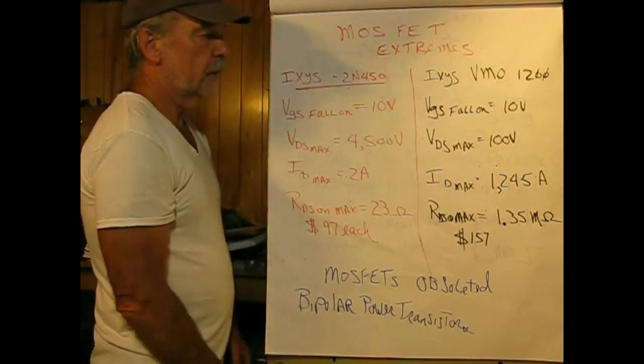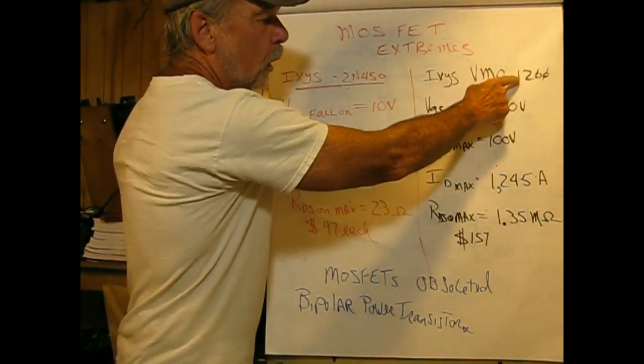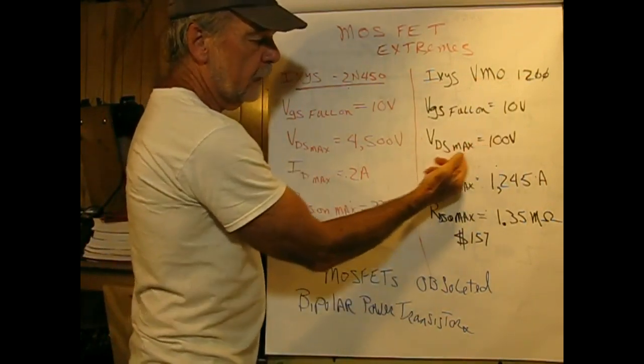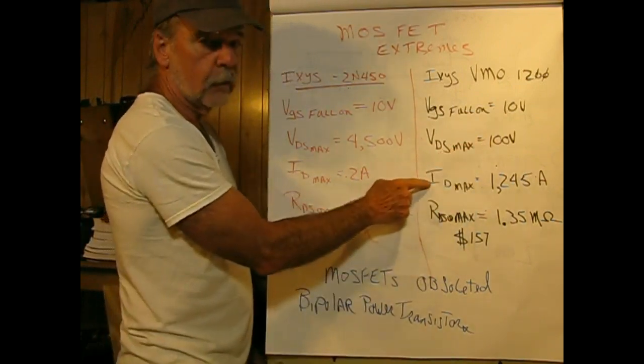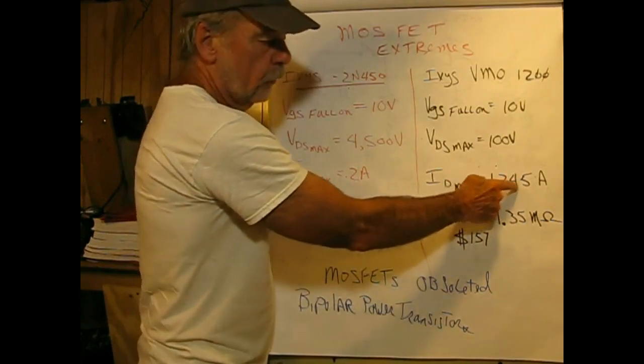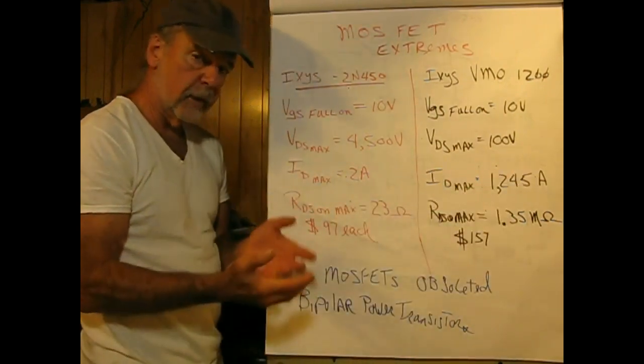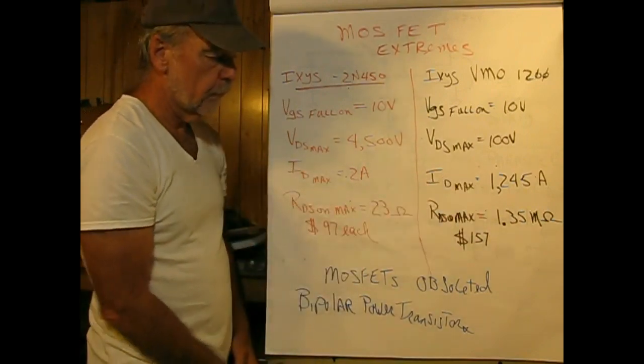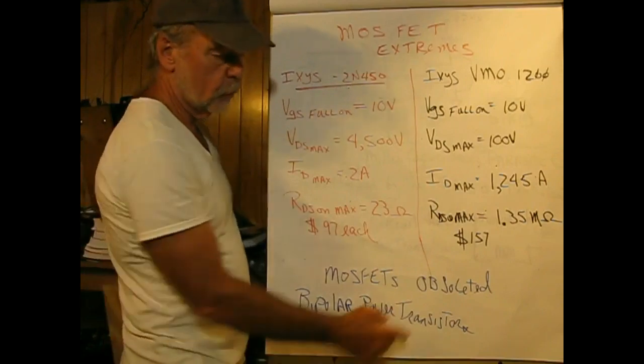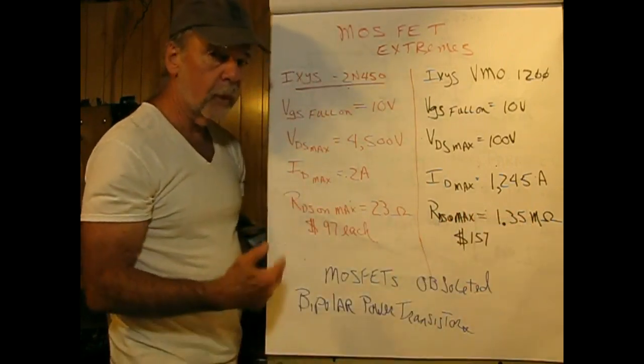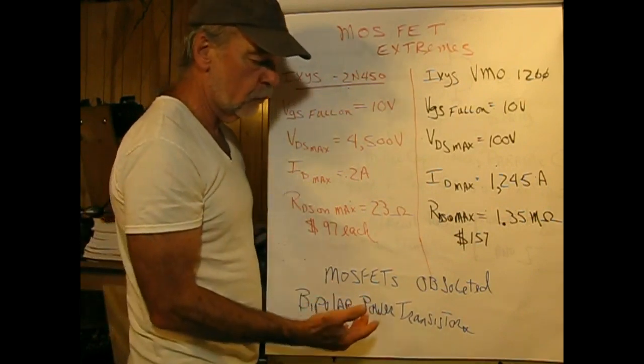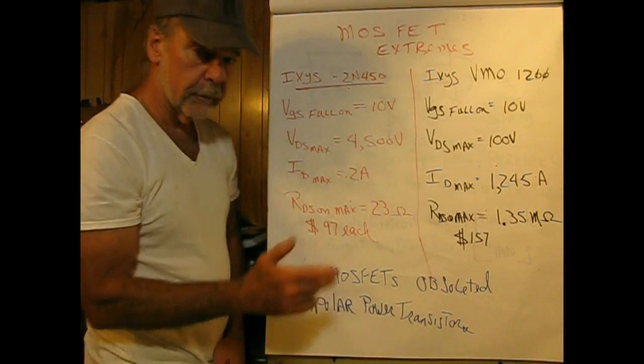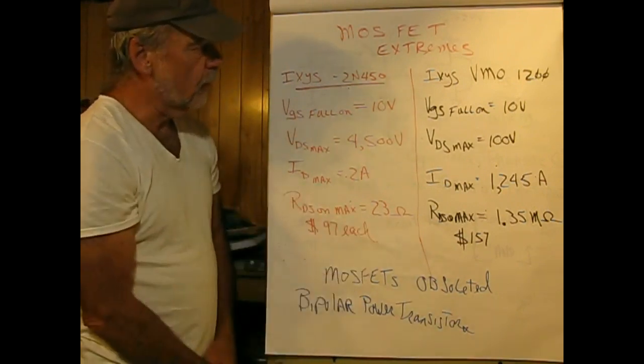On the other side of the coin, looking at high current, I found an I-axis VMO1200. VGS full-on is guaranteed to be 10 volts. VDS max is 100 volts. ID max is 1,245 amperes. This part has to have really big contact area to switch that kind of current. RDS on max, I was amazed, is 1.35 milliohms. This part costs $97 a piece, while the high voltage part costs $157.